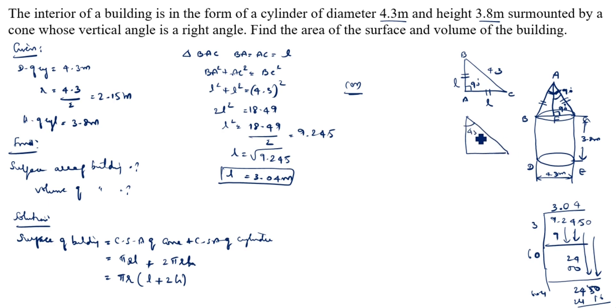This is 45, A, F, C. FC is what? This is 4.3, radius is 2.15. This value is 2.15. This value only we need to find. This value we know. This value we do not know. This is what? Opposite. This is what? Hypotenuse.